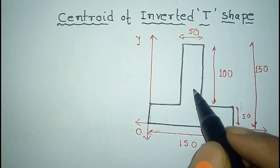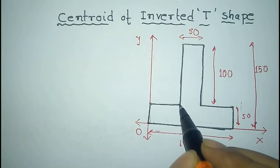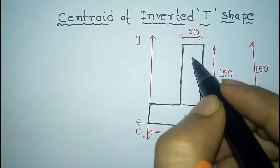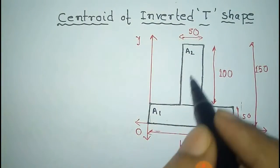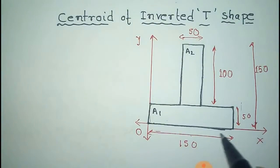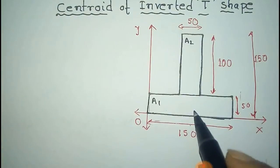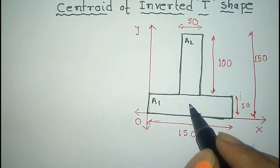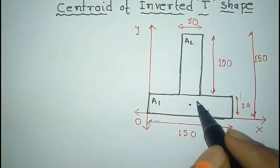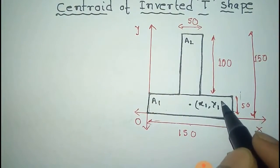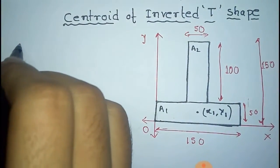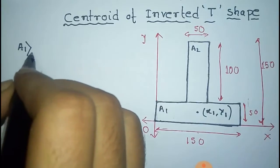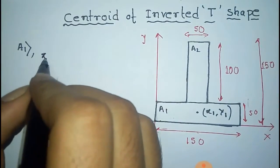To find the centroid of this section, we separate it into two rectangles. This lower rectangle is named A1 and the upper rectangle is named A2. For A1, the center of mass is located at the intersection point of its diagonals, which is the middle point of the rectangle.